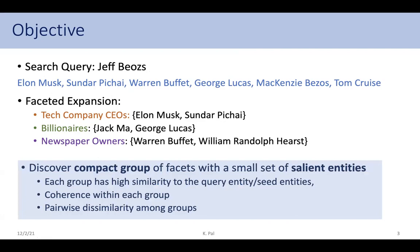So while we are finding this compact group of facets with a small set of entities, we like to focus on three main points: each of these compact groups must be highly related to the query entity; each group has to be coherent so that the entities within the group also have high similarity; and all these different groups must be diverse. Here we explore an iterative algorithm to find such compact groups.